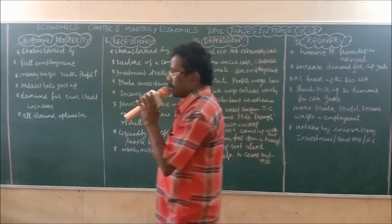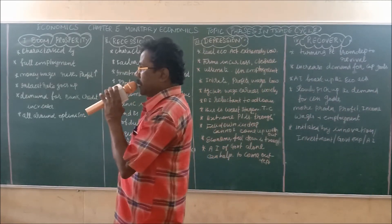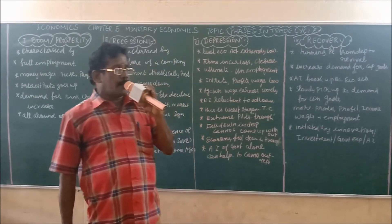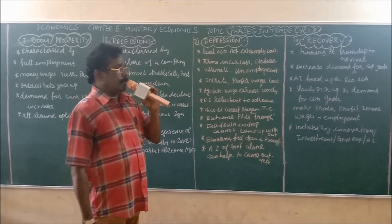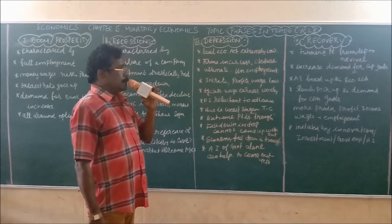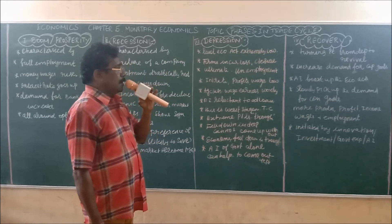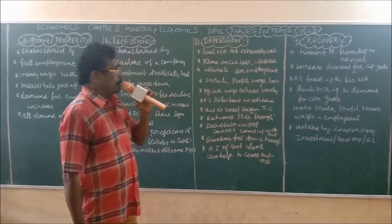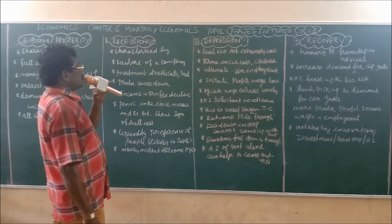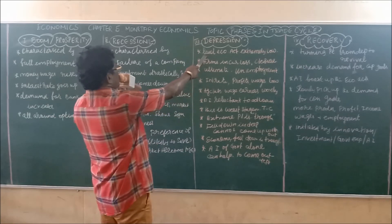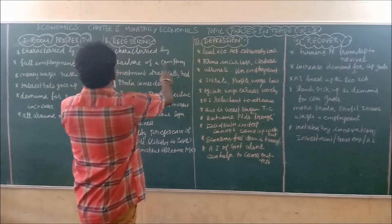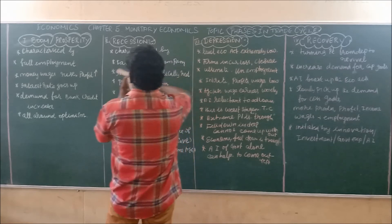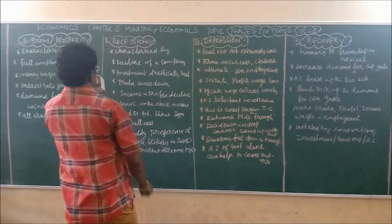There are four stages in the trade cycle. Trade cycle refers to the concern or fluctuations in the economic activities of a particular country that periodically take place — ups and downs in the economic activities of the nation. The first stage may be called depression, then recovery, then boom, and then recession.